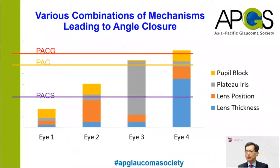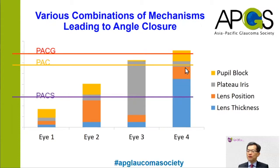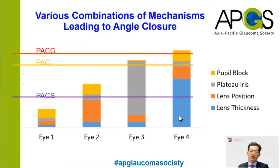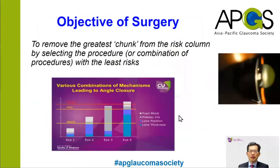In this graph, I try to represent in four different eyes the predisposition to angle closure. The taller the column, the greater is the risk of angle closure and primary angle closure glaucoma. These different colors represent the different mechanisms leading to angle closure. In eye number three, plateau iris is the main contributing mechanism, whereas in eye number four, lens thickness is the main mechanism. So in different eyes, these different mechanisms contribute to different extents.